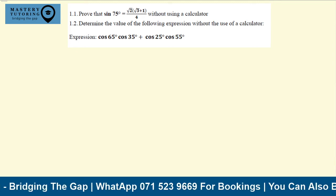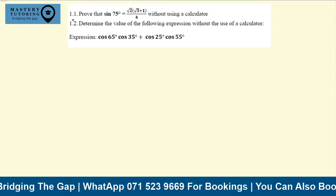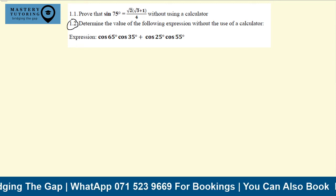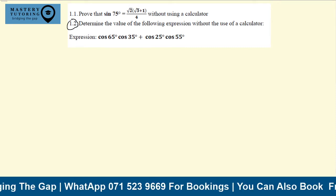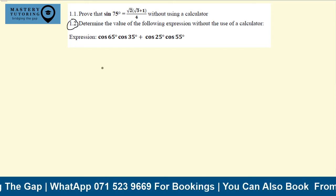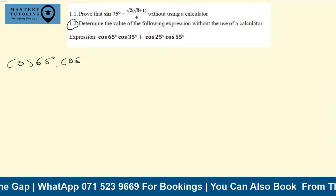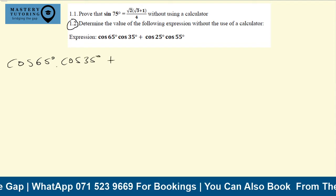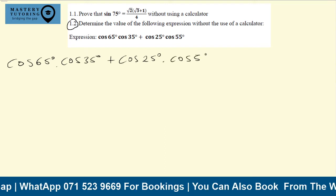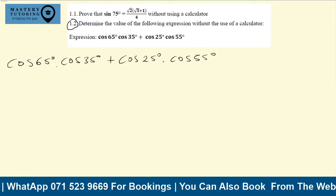Without further ado, let's start with the question. We're doing question 1.2 — there's a part one video where we covered 1.1. Question 1.2 reads: determine the value of the following expression without the use of a calculator: cos65° × cos35° + cos25° × cos55°.